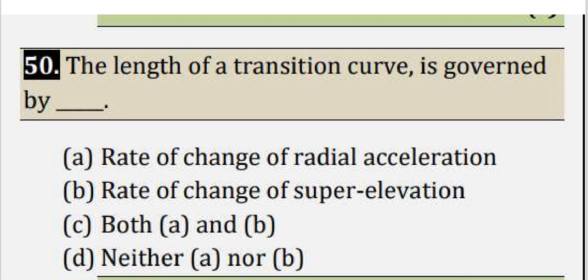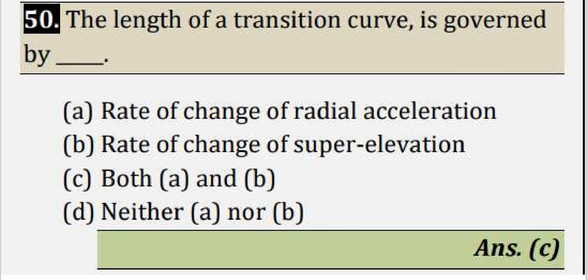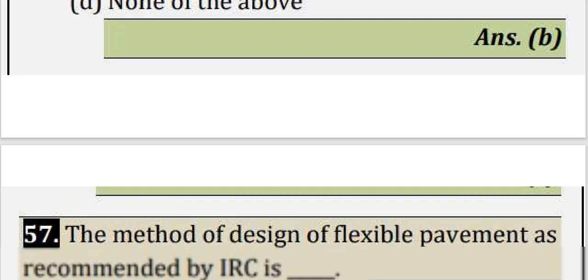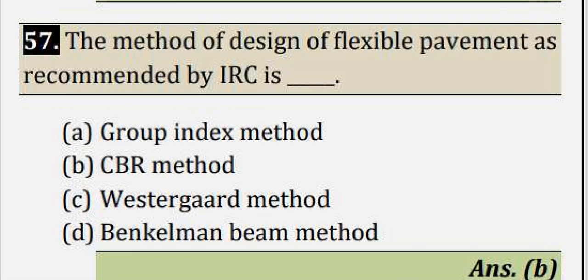The length of transition curve is governed by both rate of change of radial acceleration and rate of change of super elevation. Option C is correct. Next, question number 54: Percentage of free carbon in bitumen - bitumen compared to tar has higher percentage of free carbon, so option B is correct.